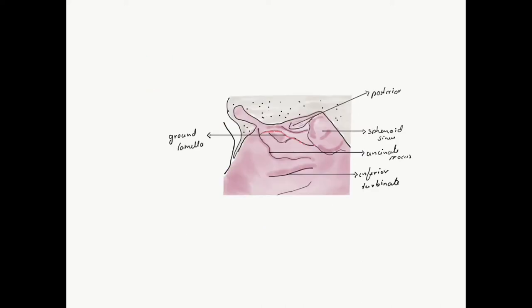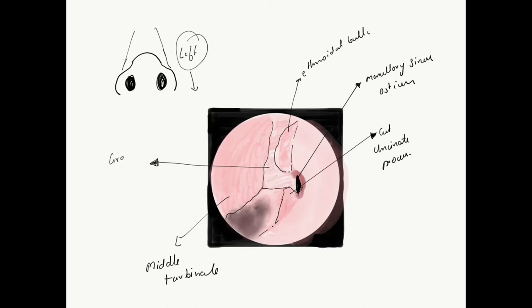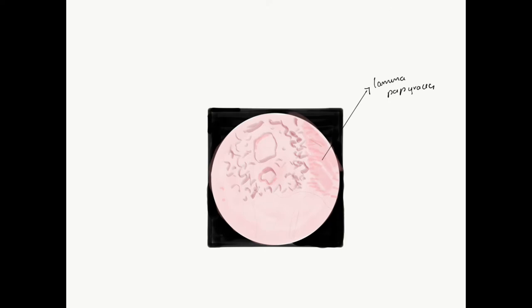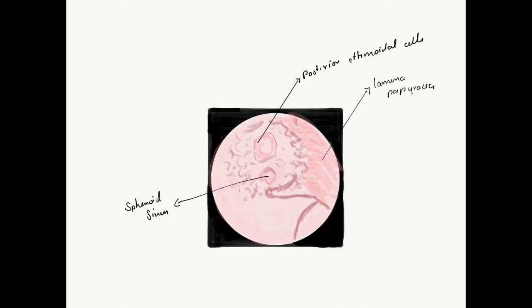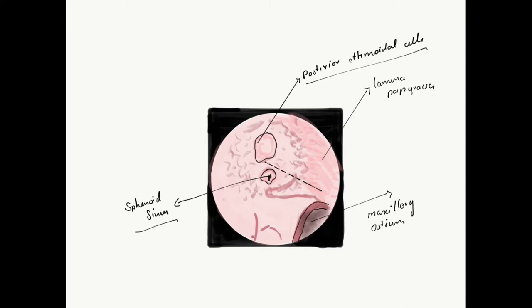The air cells behind the ground lamella are the posterior ethmoidal air cells. They have a pyramidal shape with their apex directed posteriorly, and they are located superolateral to the sphenoid sinus. To reach the posterior ethmoidal air cells it is necessary to cut open the ground lamella, usually opened inferomedially with the medial margin kept intact. As you open the ground lamella, you can see the lamina papyracea on the lateral side. One can differentiate posterior ethmoidal cells from the sphenoid sinus because the sphenoid sinus inside has the appearance of a rounded pot. A ridge running behind the maxillary sinus ostium also helps differentiate: the sinus above is posterior ethmoidal air cells and the sinus below is the sphenoid sinus.